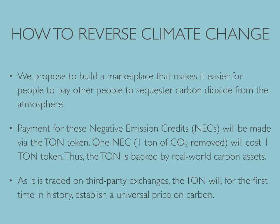So how do we reverse climate change? What we propose is to build a marketplace that makes it easier for people to pay other people to sequester carbon dioxide. The payment, the medium of exchange for these negative emission credits, is the ton token. One ton token will be worth one ton of CO2 removed, and that price will always be the same. Thus, the ton token is backed by a real-world carbon asset. As this ton token gets traded on third-party cryptocurrency exchanges, the ton will now establish for the first time a universal price on carbon removal.